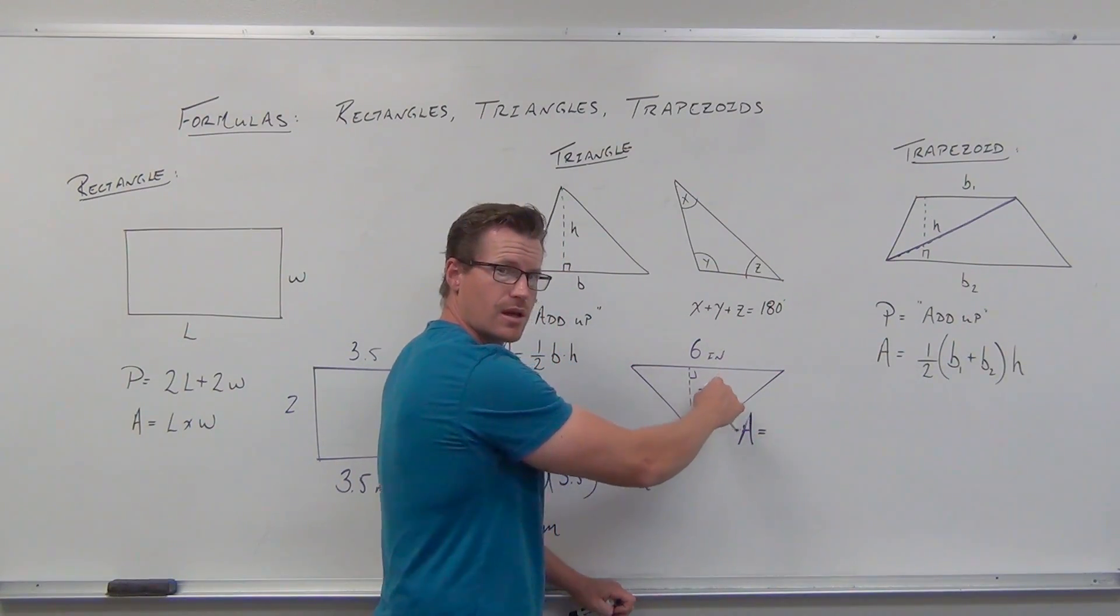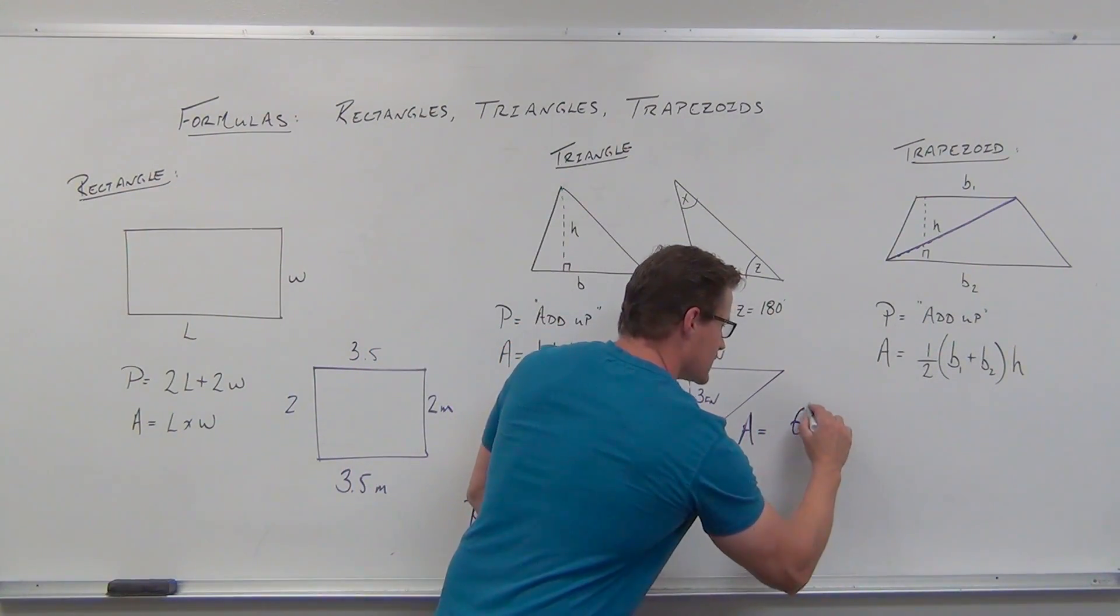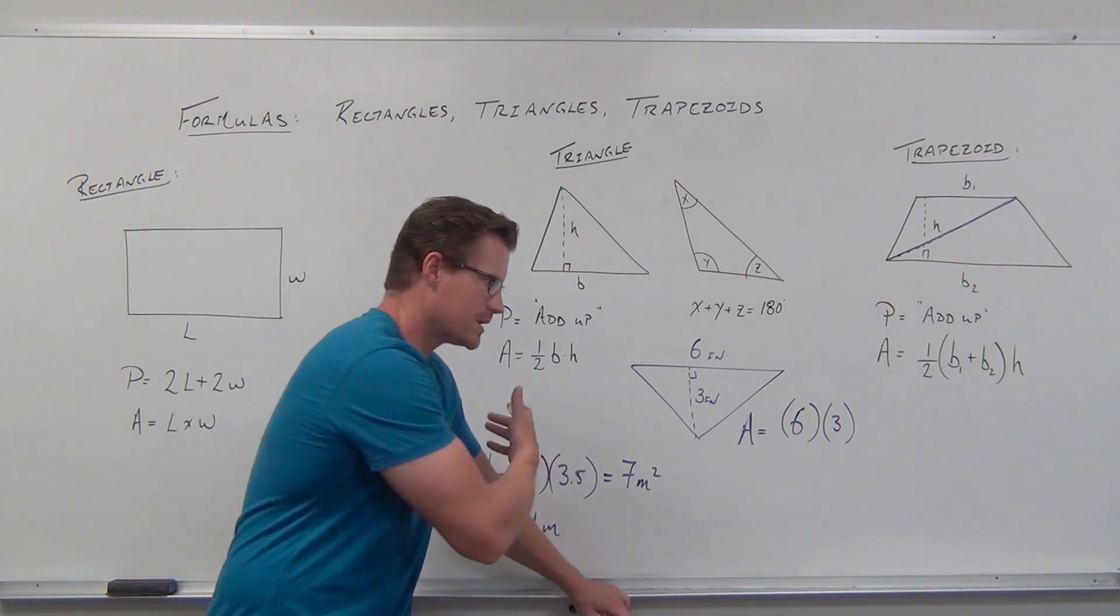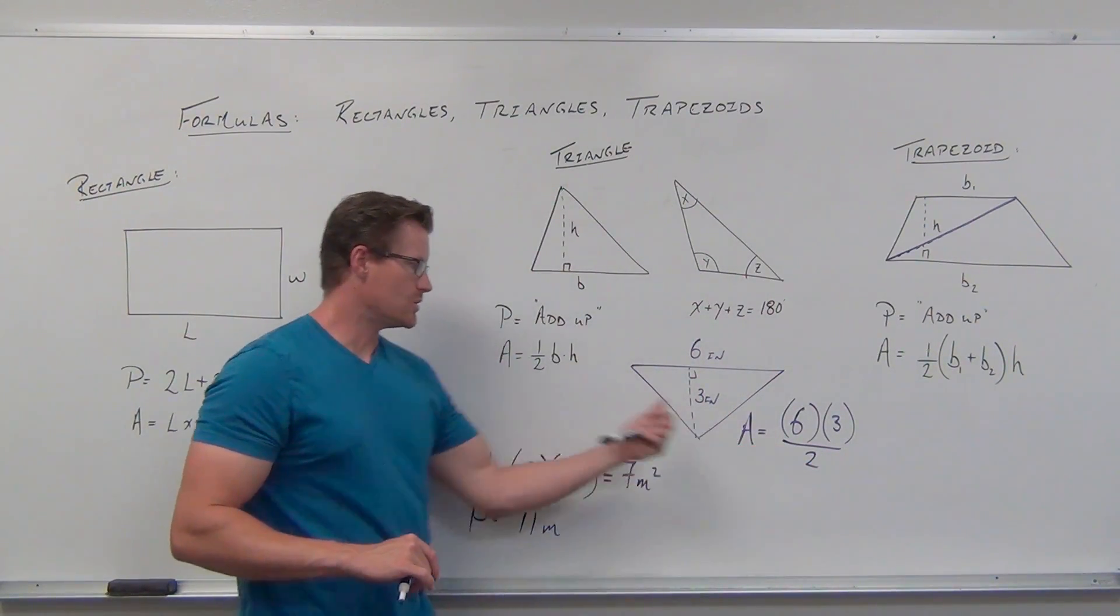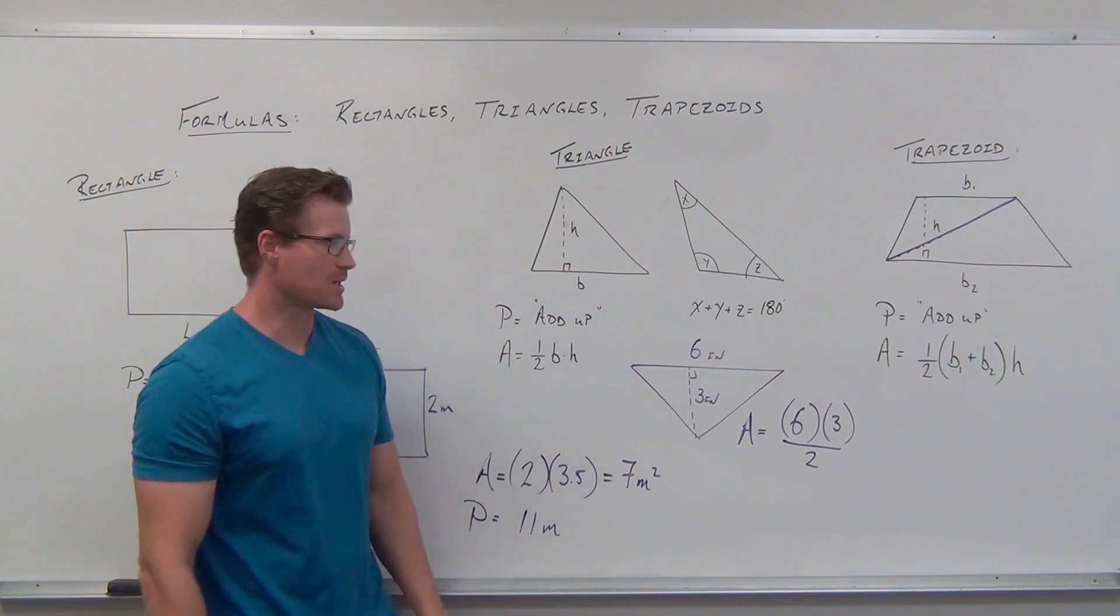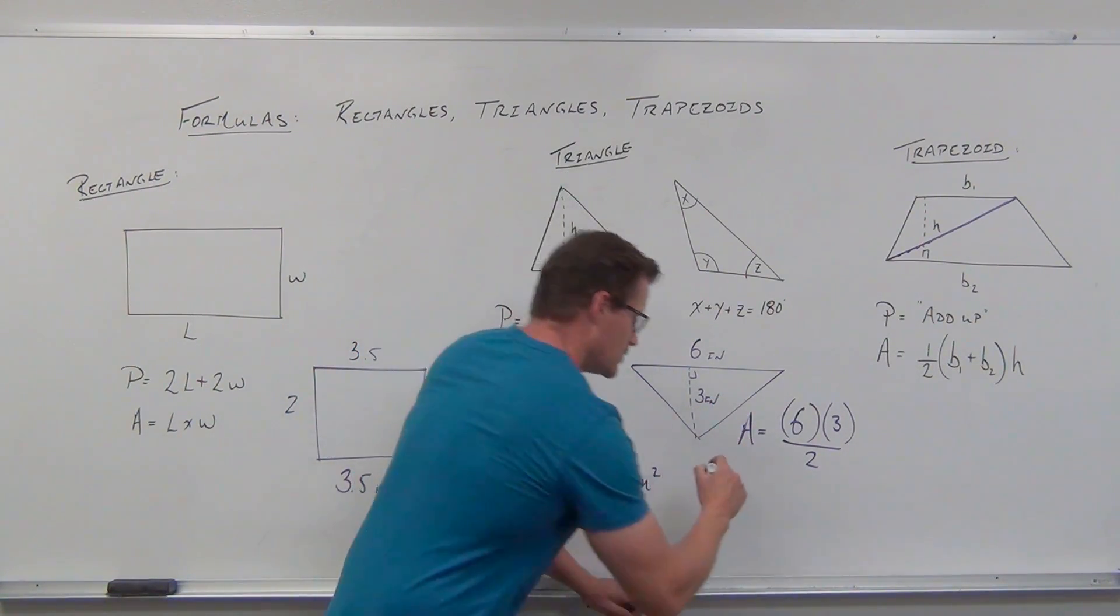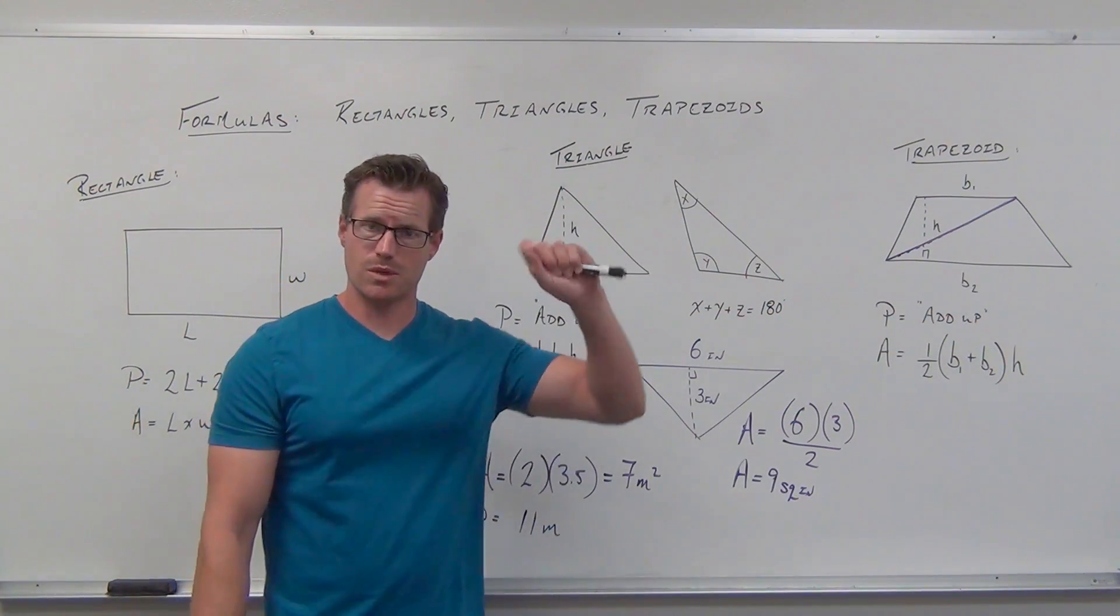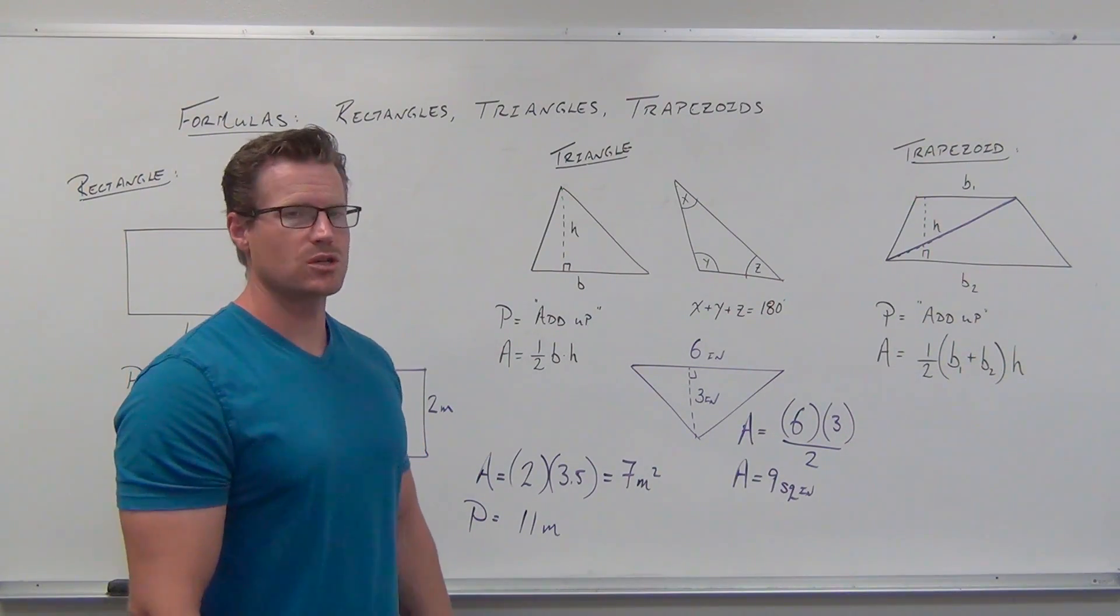To find area, take the base - one of the sides adjacent to the 90-degree angle that gives you your height. We take 6 inches times 3 inches. You can multiply by 1/2 or divide by 2 - it's the same thing. Base times height over 2 equals 1/2 times base times height. On your calculator: 6 × 3 ÷ 2. Or multiply 6 × 3 = 18, then divide by 2 = 9 square inches. You can write it as in², inches squared, or square inches - all are fine. Just make sure you have square units.